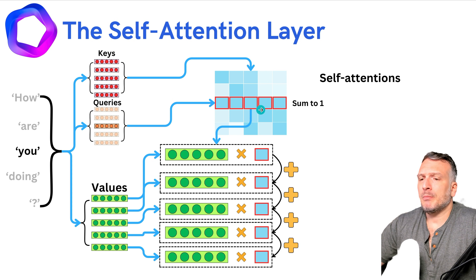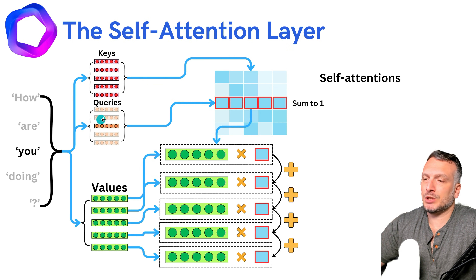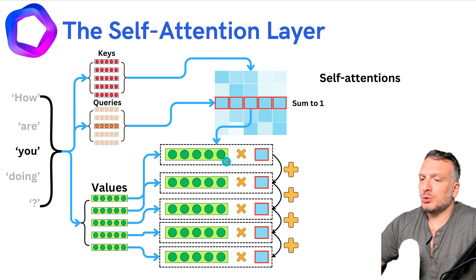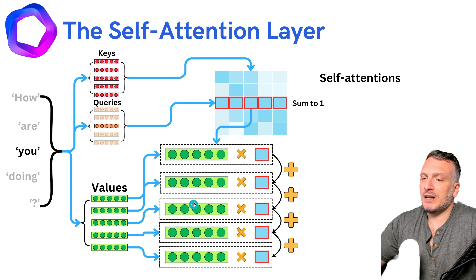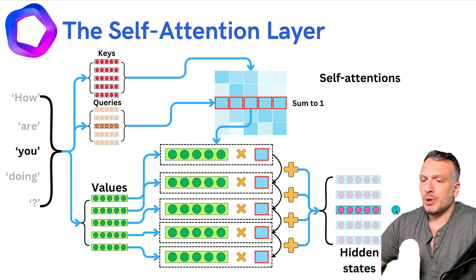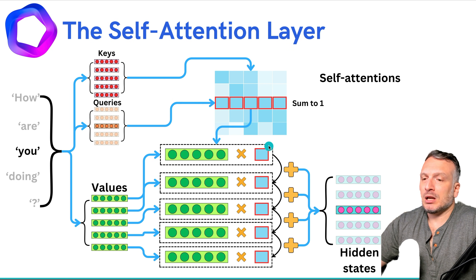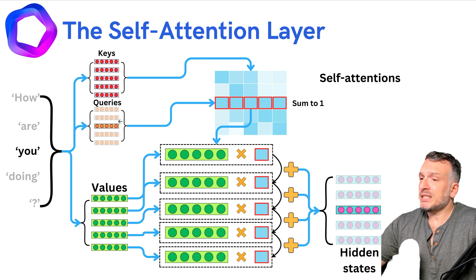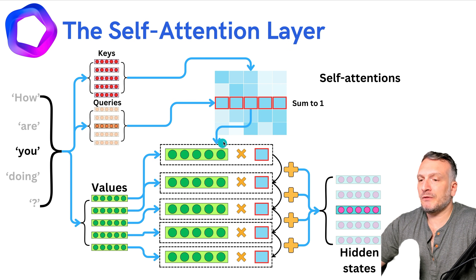We weigh the different values based on how the attentions have been computed. If the attention from the dot product between U's query and another token's key is low, we put a low weight on that token's value. The resulting hidden state for U is a weighted average of the different values based on the computed attentions. So the keys and queries provide us with self-attentions, and those self-attentions tell us how much weight to put on the different values when computing a weighted average to get the resulting hidden state.